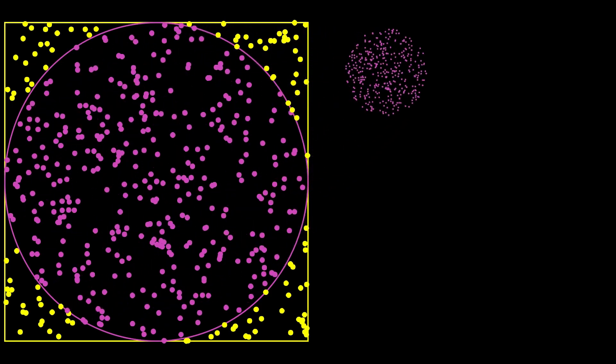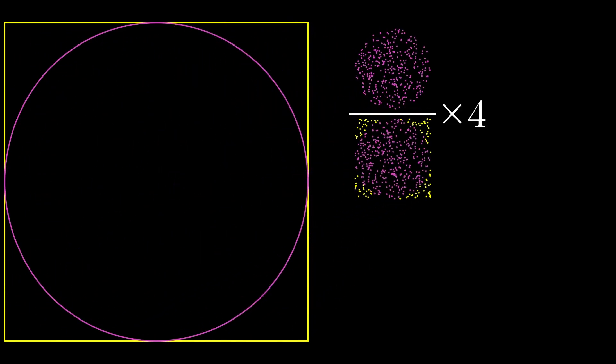Let's do this with 500 dots. Count them all. Divide. Multiply by 4 and you get about 3.112.